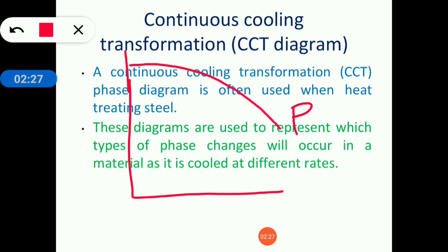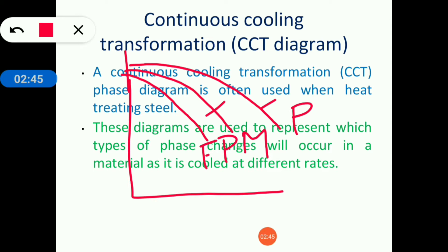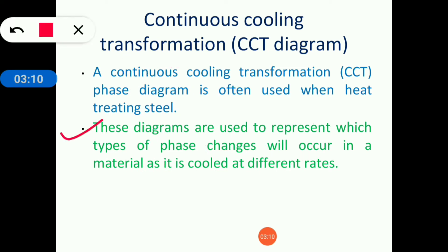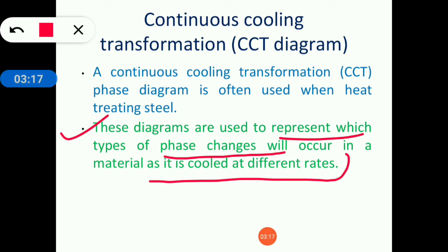For example, if the cooling rate is slow, you will get coarse pearlite. If the cooling rate is faster, you get medium grain pearlite. If faster still, you get fine pearlite. And if the cooling rate is very fast, you will get martensite. So at slow cooling rates you get different microstructures, and at fast cooling rates you get different microstructures.